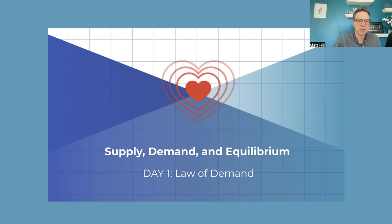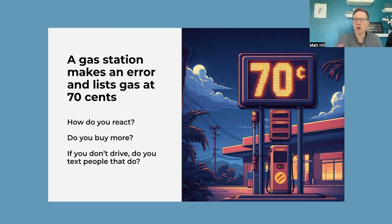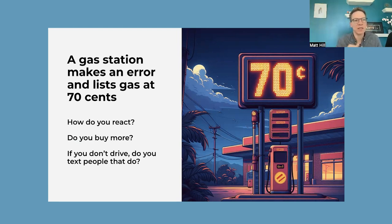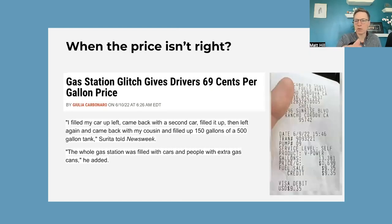We start this one by asking students about a real story where a gas station had priced their gas wrong — there was some mistake and they priced it at 70 cents. So we start a class discussion as a bell ringer about what they would do. Students are all 'fill my tank up,' but then ask: would you tell your friends? Would you tell your relatives? Would you bring another car by? If they don't drive, ask them what their parents would do. This is the cleanest example of price goes down, people are going to want to buy more, and we have some quotes to that effect from the article.